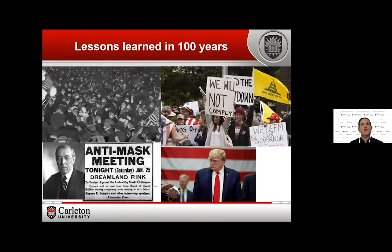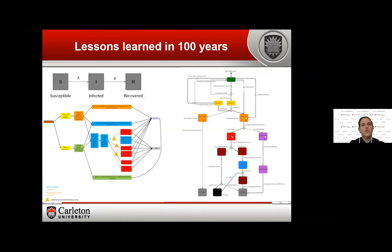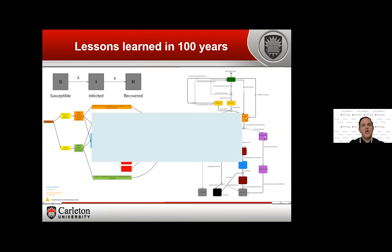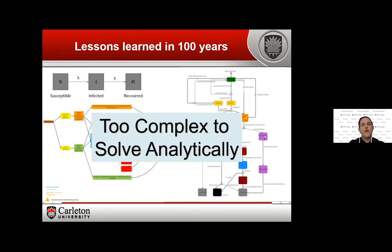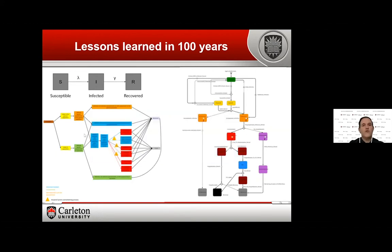We started with a simple model that has three basic equations, but models have evolved to look much more complicated — including a lot of interesting variables. These models are being used every day, but they have a problem: they are too complex to solve analytically. The original simple model can be solved with mathematics. The more complex modern models cannot.